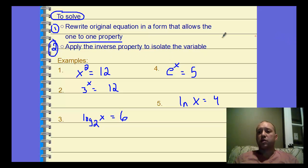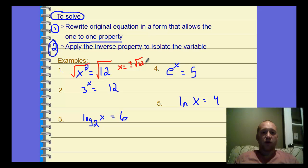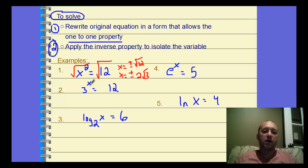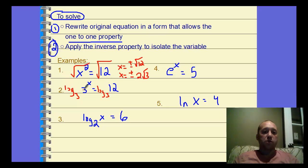We're going to start easy and get more difficult. For x squared equals 12, we use the inverse: the inverse of squaring is square rooting. Square root both sides gives x equals plus or minus the square root of 12, which is plus or minus two root three. Now where x is the exponent: to solve 3 to the x equals 12, the inverse of the exponent is a log. Taking log base 3 of both sides, log base 3 of 3 to the x gives us x, equal to log base 3 of 12. You can use change of base to approximate, but we leave it exact.